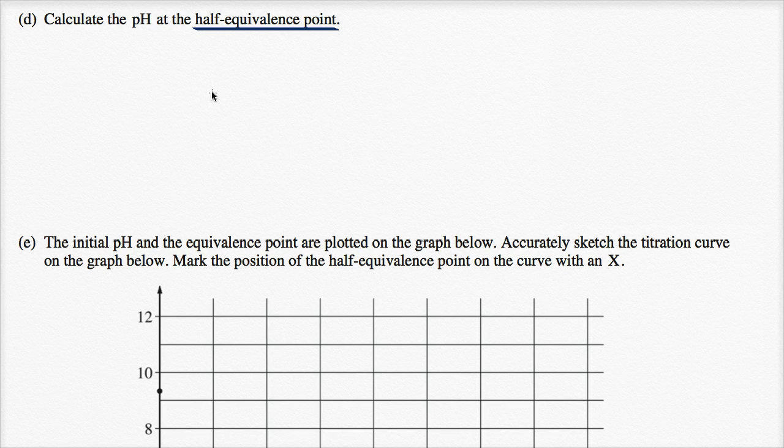The equivalence point is when the titrant, in this case the hydrochloric acid, completely reacts with the potassium sorbate, the thing that we are titrating.